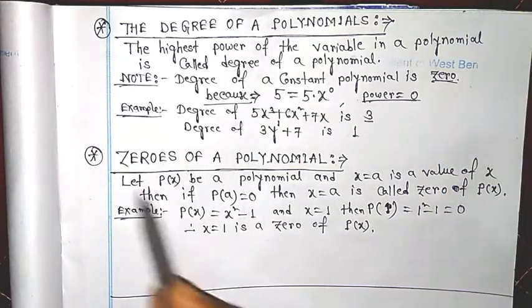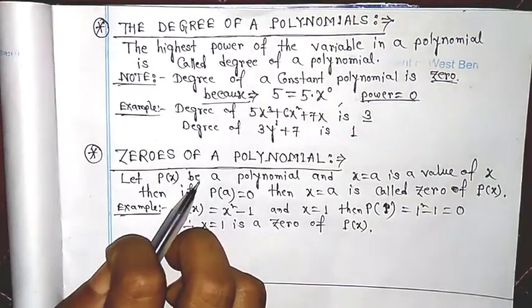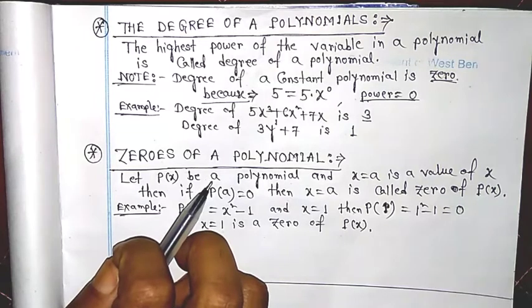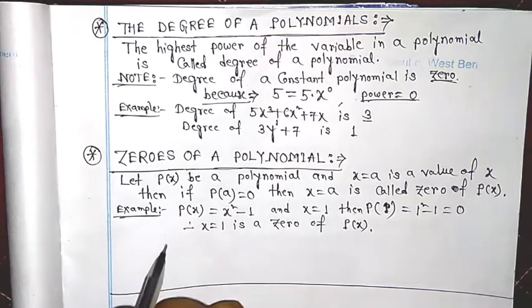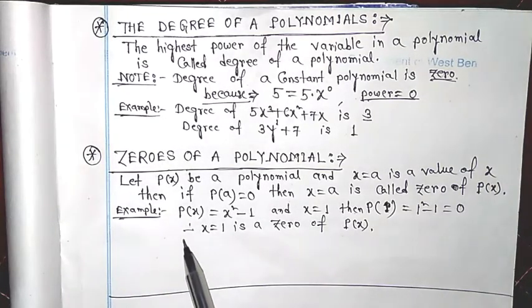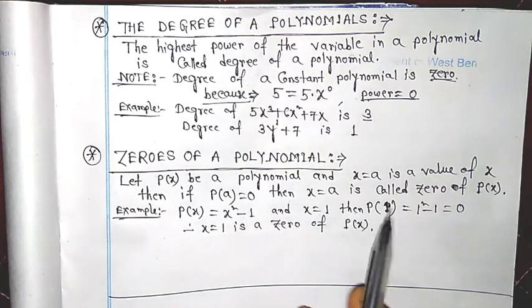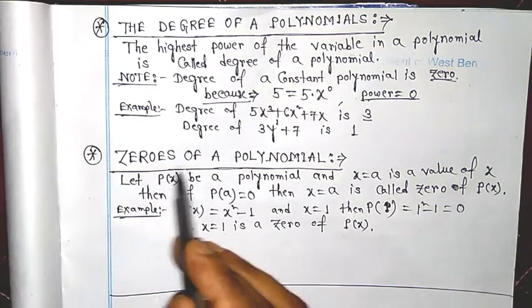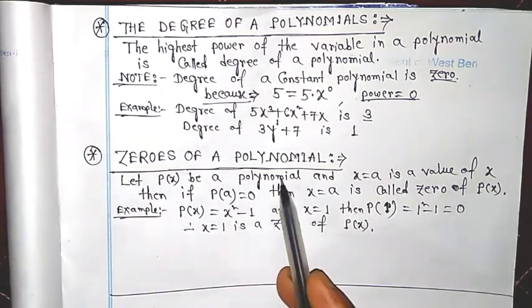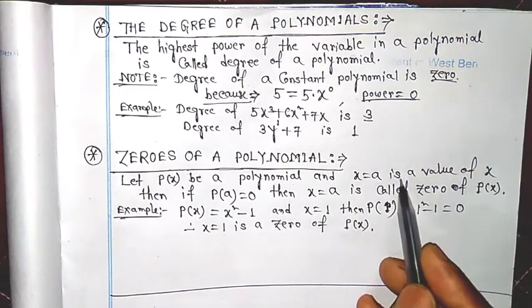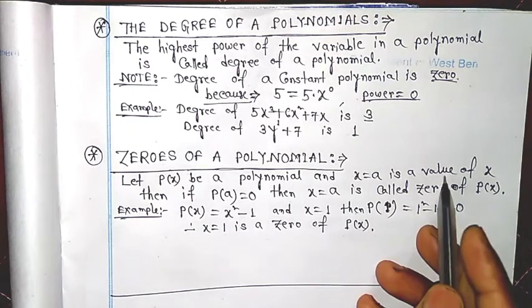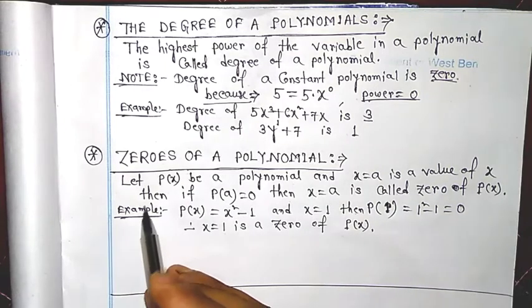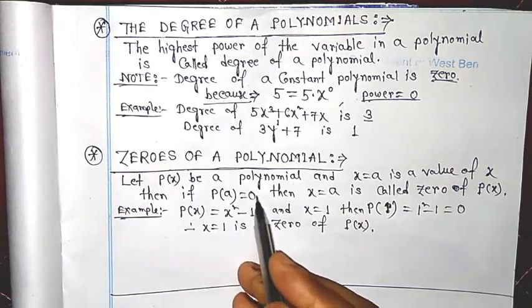Next I discuss zeros of a polynomial. This is like the solution of an equation — the concept is the same. Let p(x) be a polynomial. If x = a is a value for which p(a) = 0, then x = a is called a zero of the polynomial.